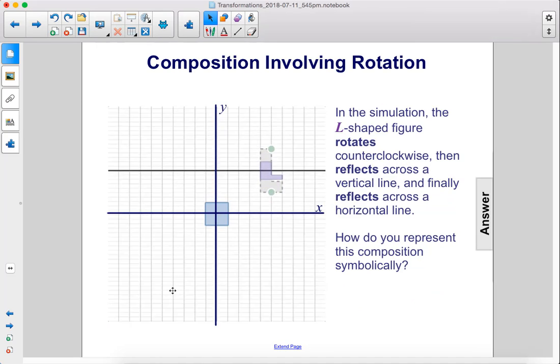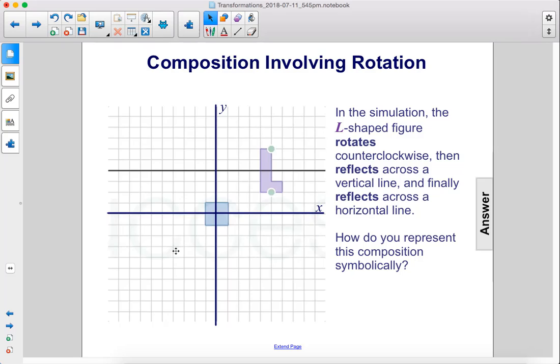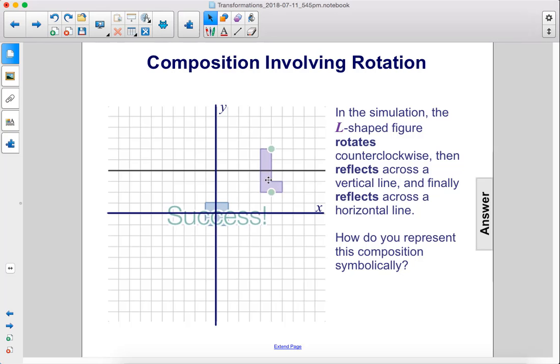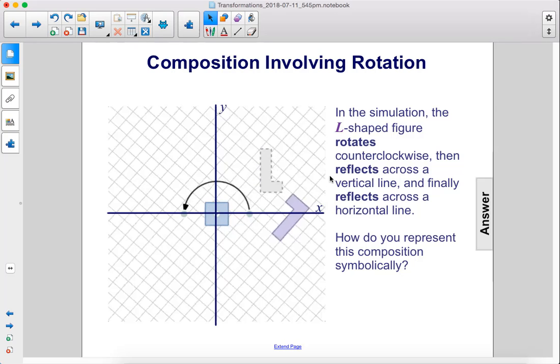In the simulation, the L-shaped figure starts over here and then rotates 180 degrees around the origin to get over here, and then it reflects across a vertical line and finally reflects across a horizontal line.